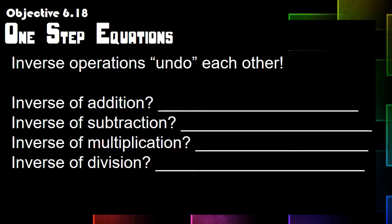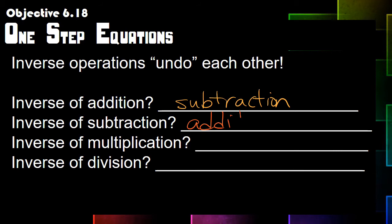Inverse operations undo each other. The inverse of addition is subtraction, and the inverse of subtraction is addition. The inverse of multiplication is division, and the inverse of division is multiplication. This information is going to be very handy for solving one-step equations.